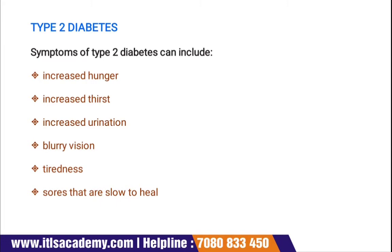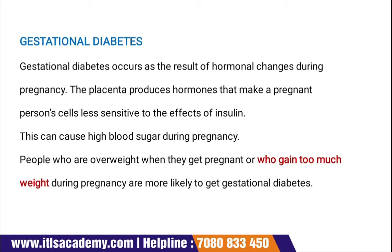Gestational diabetes occurs as a result of hormonal changes during pregnancy. The placenta produces hormones that make a pregnant person's cells less sensitive to the effect of insulin, which can cause high blood sugar during pregnancy. People who are overweight when they become pregnant, or who gain too much weight during pregnancy, are more likely to develop gestational diabetes.